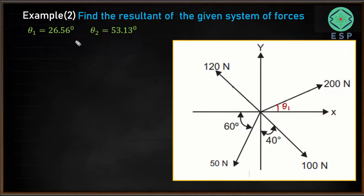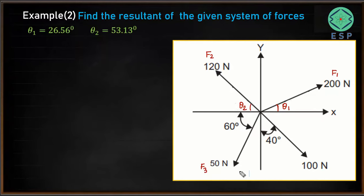Now we'll name the forces: this force is F1, this one is F2, this one is F3, and this one is F4. We now know the angles made by all forces with respect to the given axes. Theta 1 and theta 2 have been calculated; the other two angles are given as 60 degrees and 40 degrees.